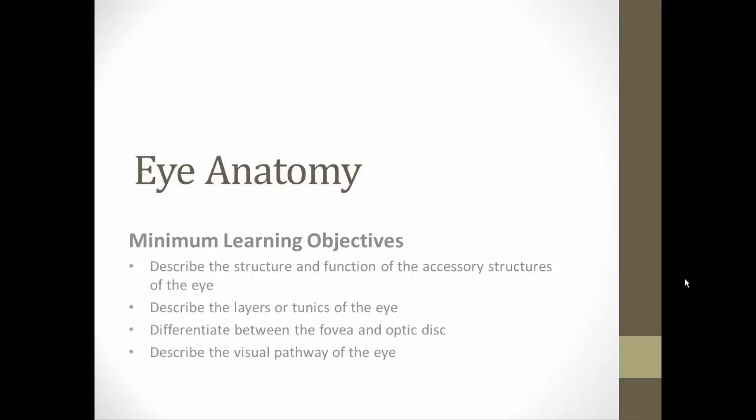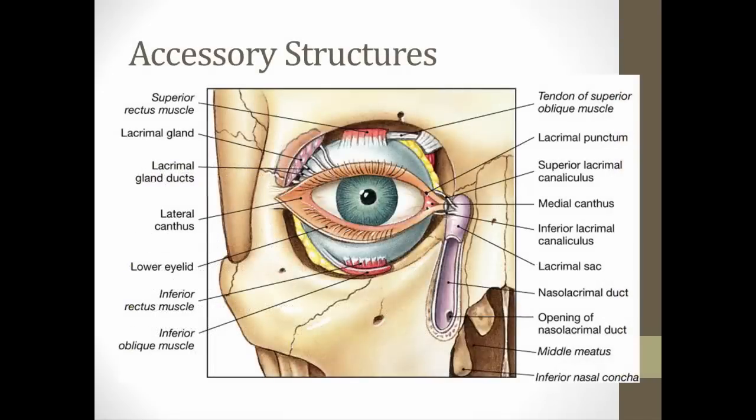In this video lecture we'll be looking at eye anatomy, specifically the accessory structures associated with the eye, then the anatomy of the eye by looking at its layers, their composition, and specialized structures such as the fovea and optic disc. Finally, we'll close with the visual pathway, looking at how neural impulses travel from the retina all the way back to the visual area in the occipital lobe.